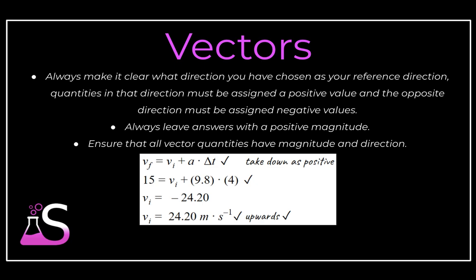And then in physics when dealing with vectors it is very important to choose a reference direction or indicate what your reference direction is. And that can simply be done by saying take down as positive. You may choose whichever reference direction you want but then make sure that you leave your final answer with a positive magnitude. So if you do end up with, for example, a negative velocity, you would always write that as a positive velocity in the negative reference direction.